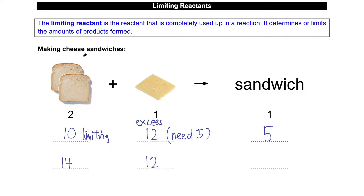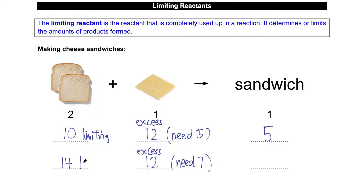If you exercise some common sense here: the ratio is 2:1, which means for 14 slices of bread I would need 7 slices of cheese, but I actually have 12. So in the same sense, cheese is still in excess, and bread is my limiting reagent. It doesn't mean the smaller number is the limiting reactant.